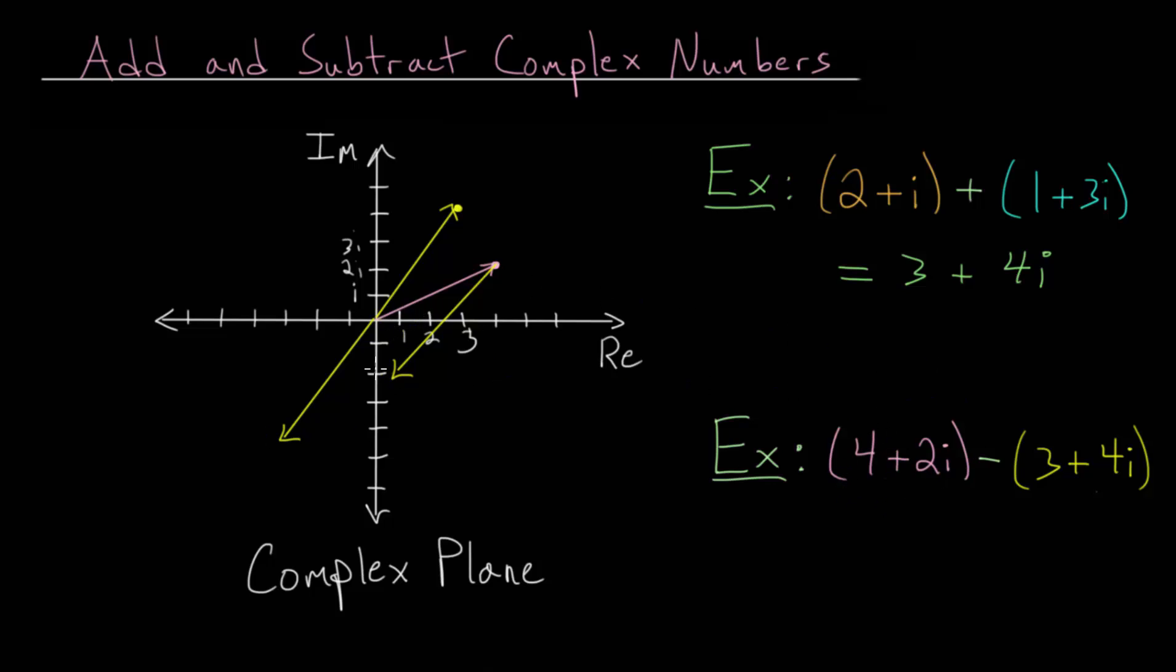So our new vector, or the difference of these two complex numbers, will start at the origin and go to where they finish. And let me use a straight line tool for that. So it starts at the origin and will essentially go right there. And that new vector is pointing to the point 1 and then minus 2i. Since it's 1 over in the positive real direction, and it's down 2 or 2 imaginary units in that imaginary direction.